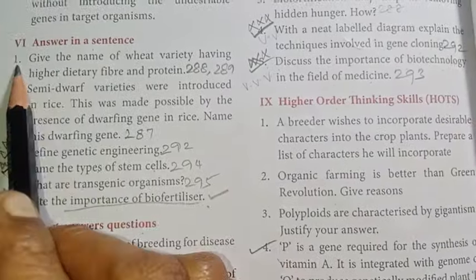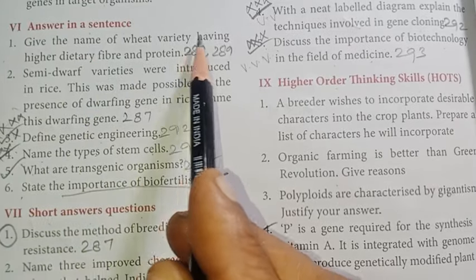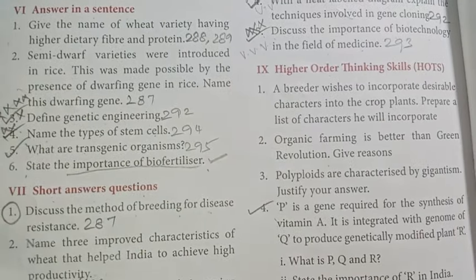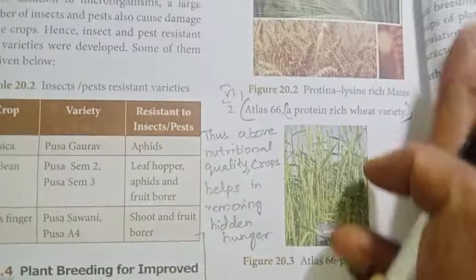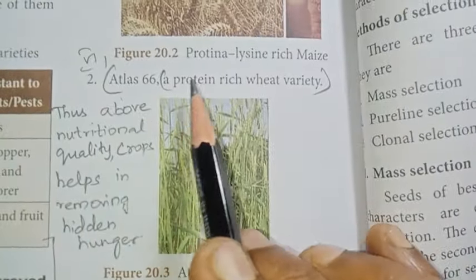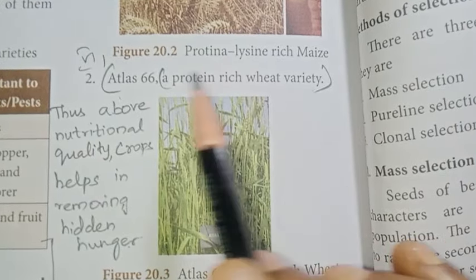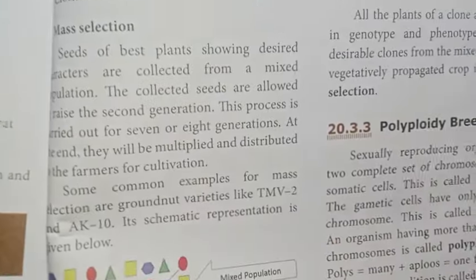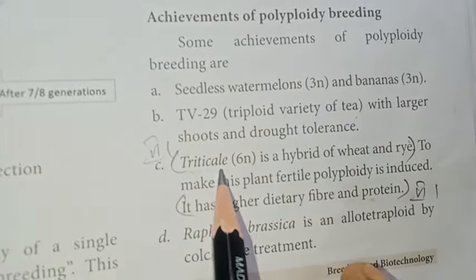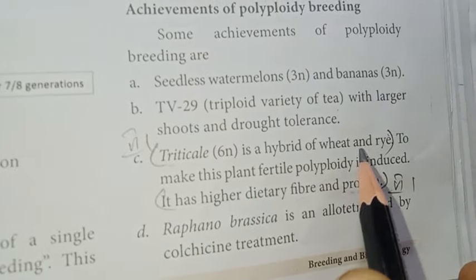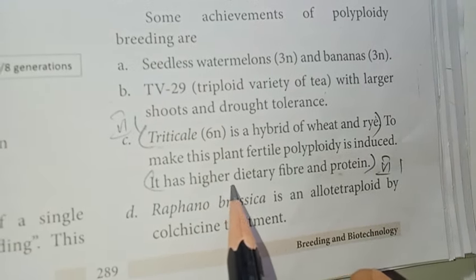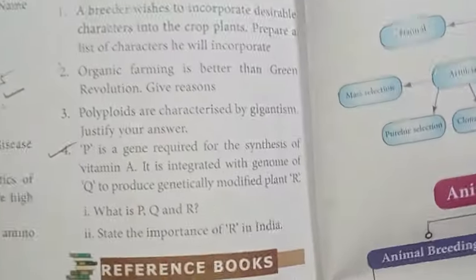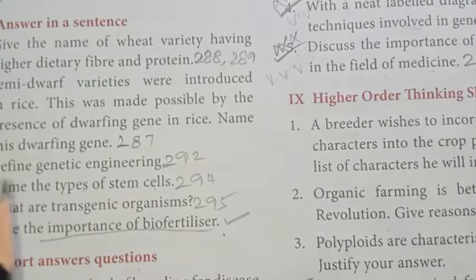Answer in a sentence. First: Give the name of the wheat variety having higher dietary fiber and protein. Page 288-289. Atlas 66 is a protein-rich wheat variety; it is a hybrid of wheat and rye and has higher dietary fiber and protein.